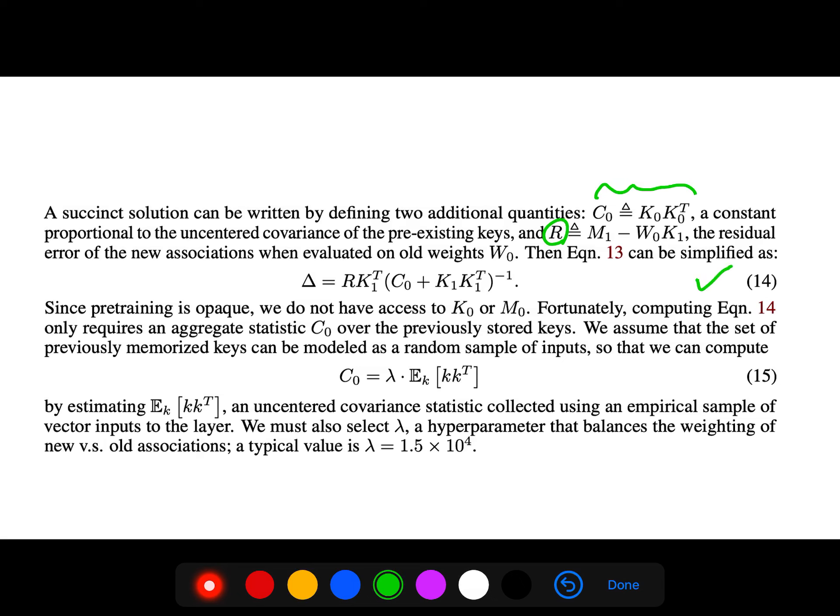R_C and R, the residual error of the new association when evaluated on old weights. It can be simplified like this. We assume that the set of previously memorized keys can be modeled as a random sample of inputs, so we can compute C_0. Because C_0 is aggregate statistics over previously stored keys, we just estimate this expectation, which is an uncentered covariance statistic collected using an empirical sample of vector inputs to the layer.